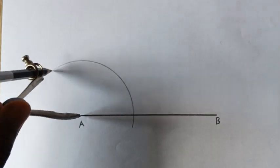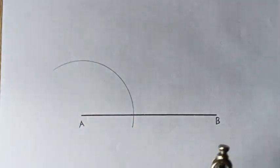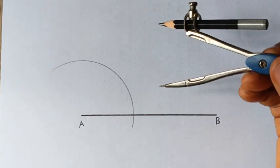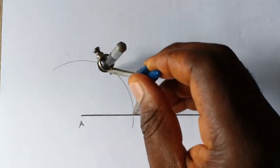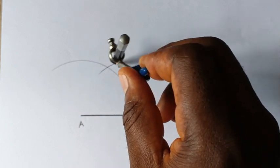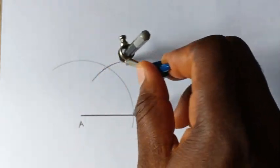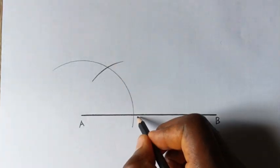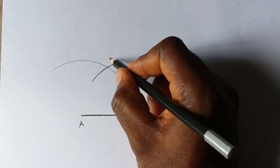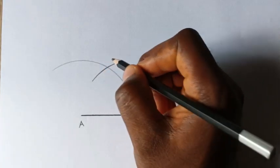So now once you cut an arc using that same radius, you now stand at this point and cut another arc. So this point will be your point C and this point here should be your point D.